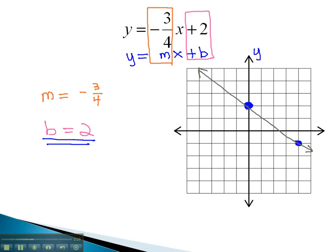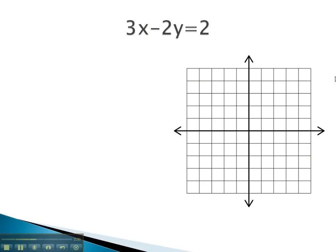As we attempt to work through this process, the equation won't always be set up in y equals mx plus b, or slope-intercept form. In this case, we will have to solve for y in order to first identify the key information.